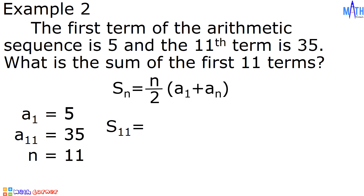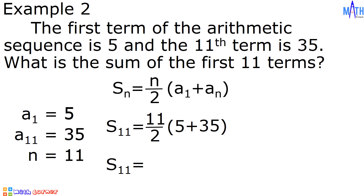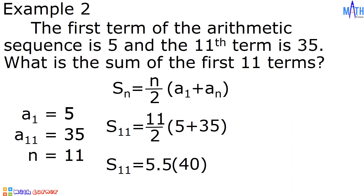After substitution, we have S sub 11 equals 11 divided by 2 times the quantity 5 plus 35. Let us simplify. 11 divided by 2 is equal to 5.5. 5 plus 35 is equal to 40. Multiplying these gives 220. And that is the sum of the first 11 terms.